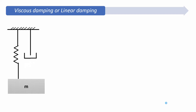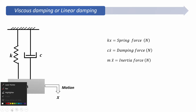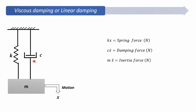Now we see the concept of viscous damping or linear damping. The arrangement of the system is shown in the figure. We have a mass m which is supported by a spring k and a dashpot or viscous damper c, which has a damping coefficient c. This is known as the dashpot, which will offer resistance to the motion. The restoring force is offered by the movement of the piston inside the cylinder, which is filled with oil. The oil offers viscous resistance to the motion of the piston, and that is known as the viscous damper.